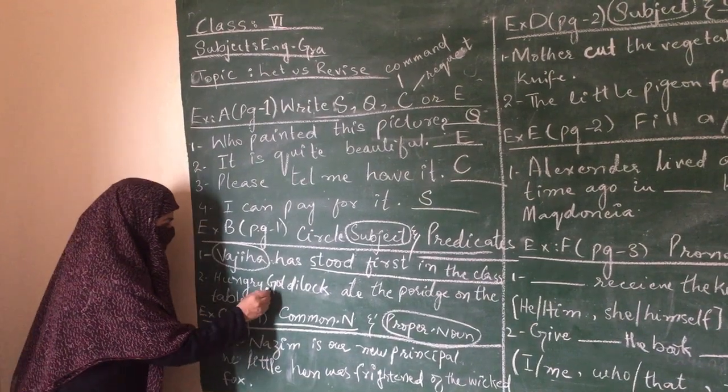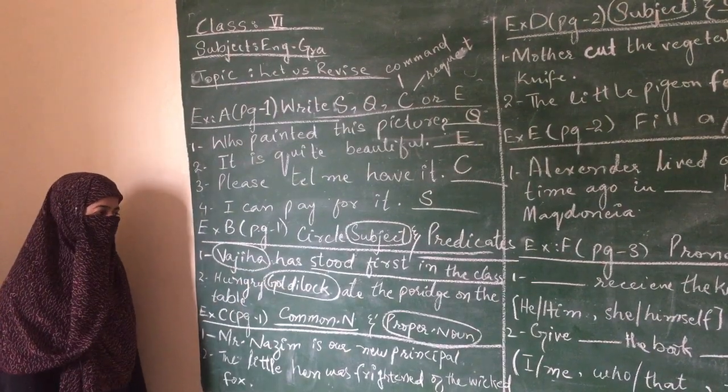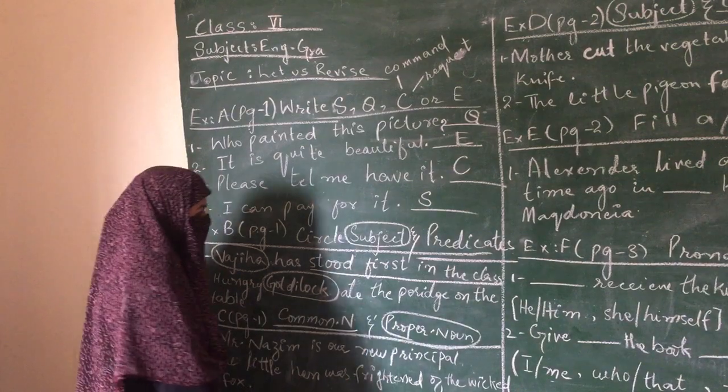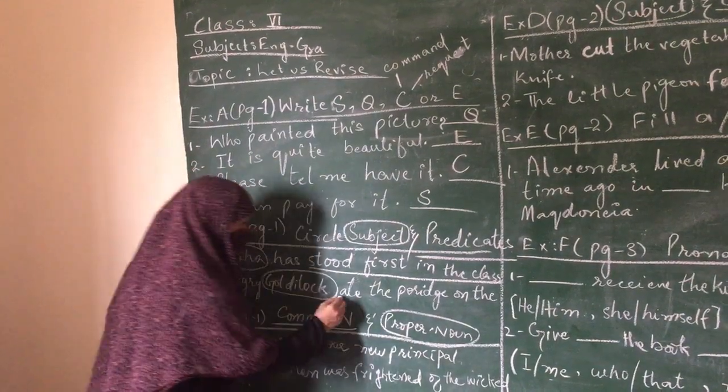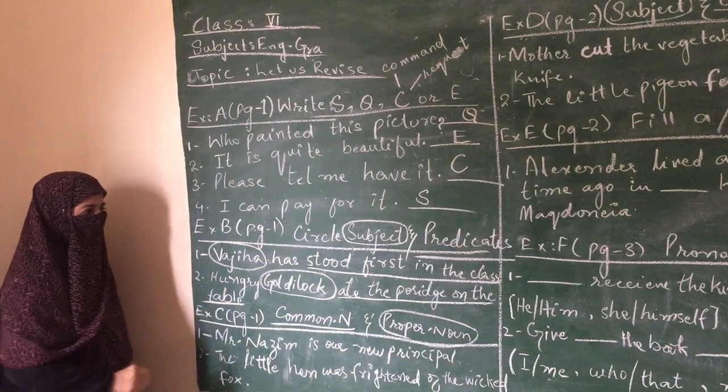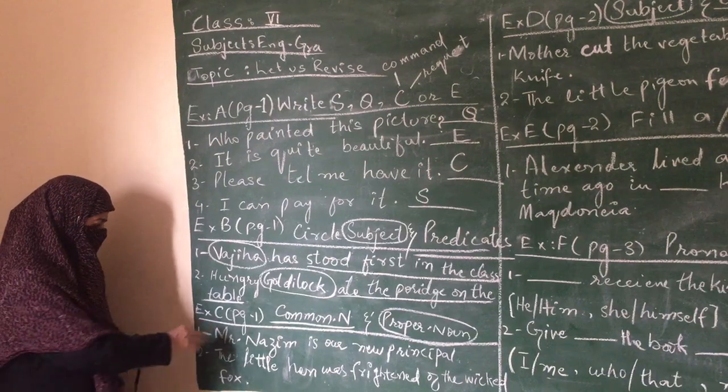In this sentence, Goldilocks is our subject. We are talking about Goldilocks and what she did: ate the porridge on the table. What did she do? She ate porridge that was kept on the table. So it is a predicate. It tells about what Goldilocks has done.